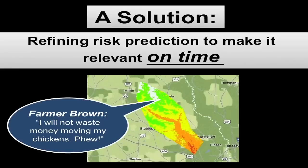So we need to speed up vulnerability science, get the information to people on the ground, on time, so that the farmer can now know, before the flood even occurs, that he doesn't live in a flood plain, and he doesn't need to spend the extra resources.